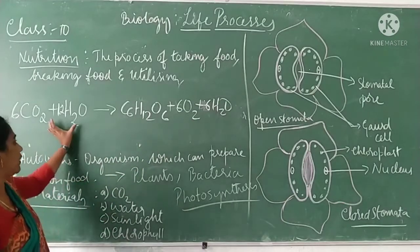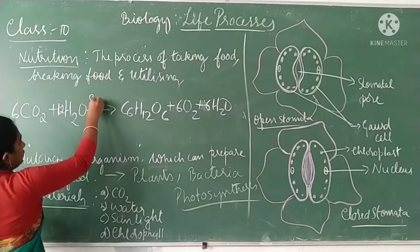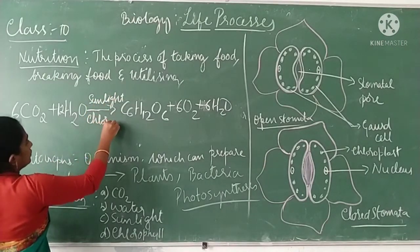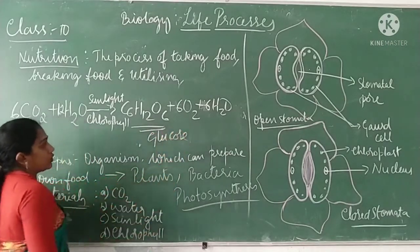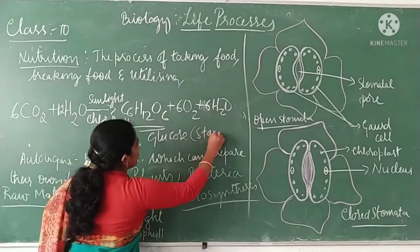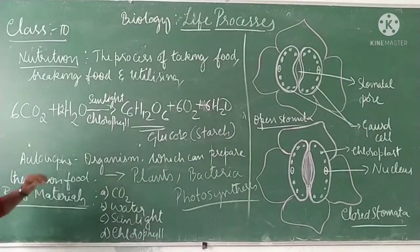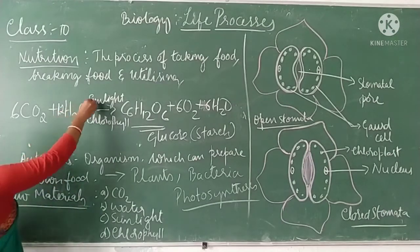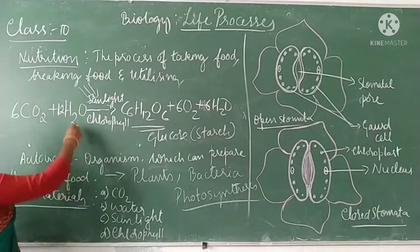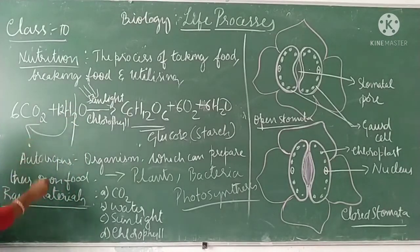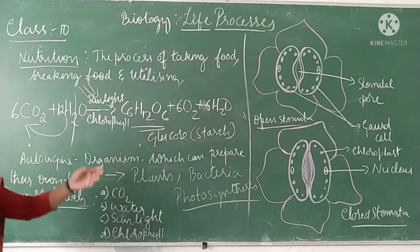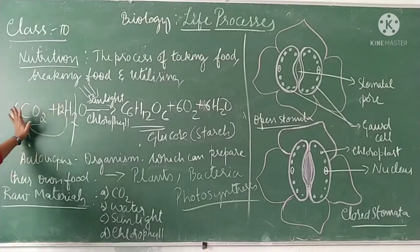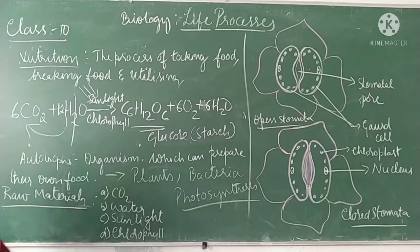The food is prepared in the form of glucose, a six-molecule compound, and stored in plants as starch. The events during photosynthesis are: first, absorption of sunlight; second, splitting of water into hydrogen and oxygen; third, reduction of carbon dioxide to form glucose. Light energy is converted into chemical energy, which splits water molecules, and that hydrogen reduces CO₂ to form glucose. Now let us see which raw materials are required for photosynthesis: carbon dioxide, water, sunlight, and chlorophyll.